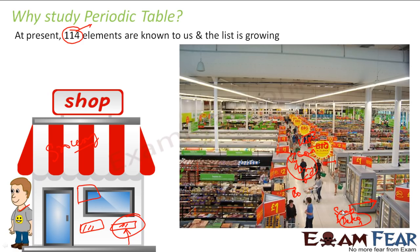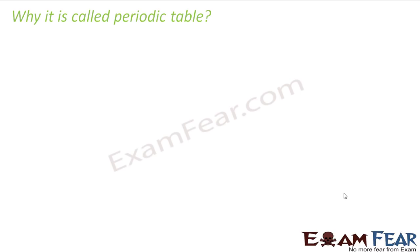Similarly, the elements have been arranged in a particular tabular fashion so that it's easy to pick one element — just by looking at the element and looking at its position in the periodic table, you can guess the properties of that element.